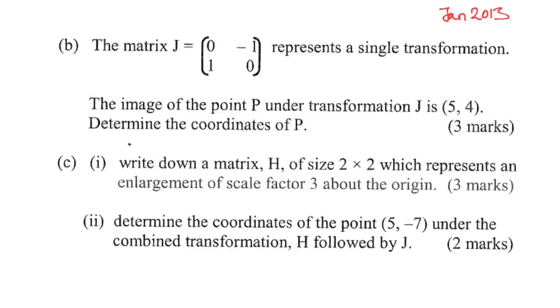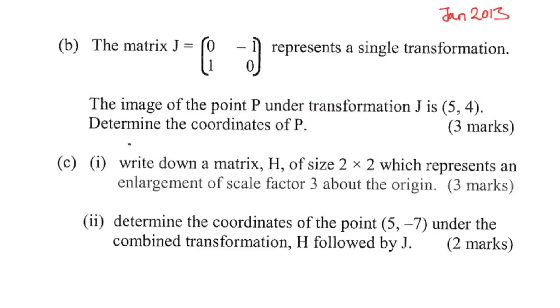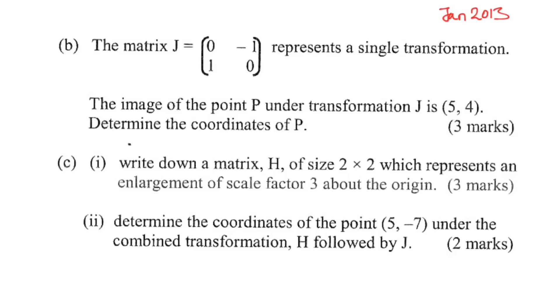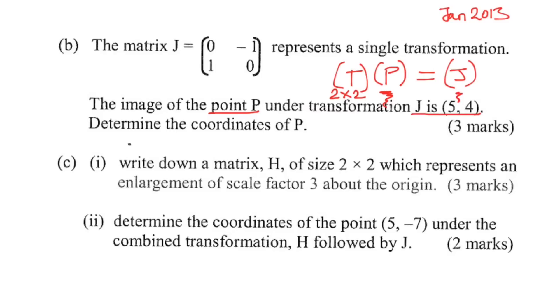The image of point P under the transformation is (5, 4). Determine the coordinates of P. What you need to realize about matrix transformation is that it just means take a matrix and multiply it by the transformation matrix — that's it. If you know matrix multiplication, you already know matrix transformation. We transformed P and got J: this is the 2×2 transformation matrix, this is the point P we want to find, and (5, 4) is the image.